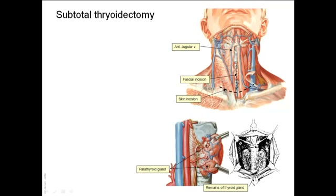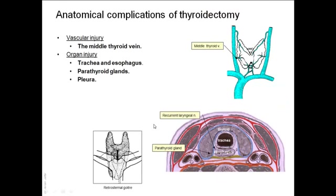In this case, the remaining part of the thyroid gland can get its blood supply even though all the arteries are ligated, because there is still an anastomosis with the tracheal and esophageal arteries. This anastomosis is enough to supply the remaining thyroid tissue.